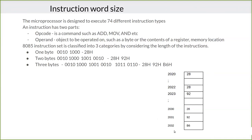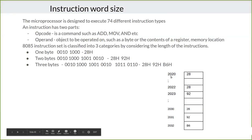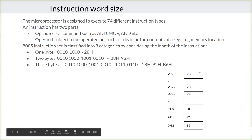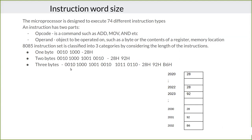Later microprocessors have more memory, and based on that, the address lines and data bit storage may also vary. For the basic microprocessor we are studying here, it is only eight bits. Nowadays processors can store 128 bits also, but let us not worry about that. We are concentrating on the basics, and if you know this, you will be able to understand the latest ones as well.